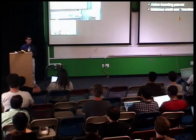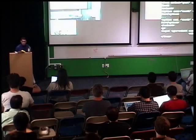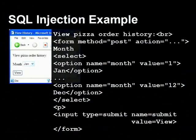You might think: the problem occurred because there was a quote and a semicolon, so I should just filter out those characters. Unfortunately, that's not enough. Imagine a website that allows you to buy pizzas online, with a page to view your order history. There's a pull-down where you select the month to view all your pizzas for that month.